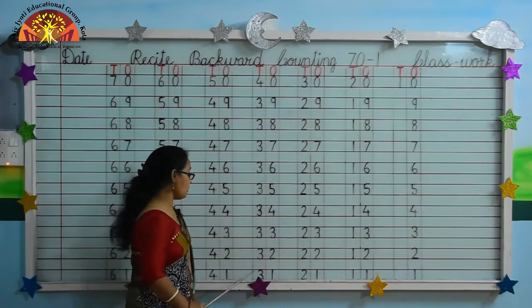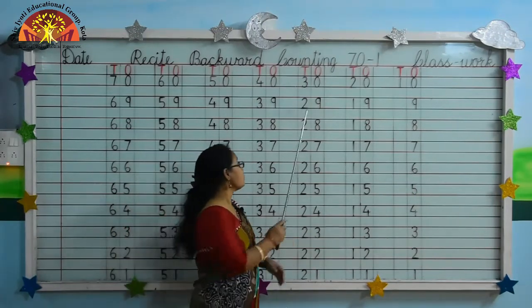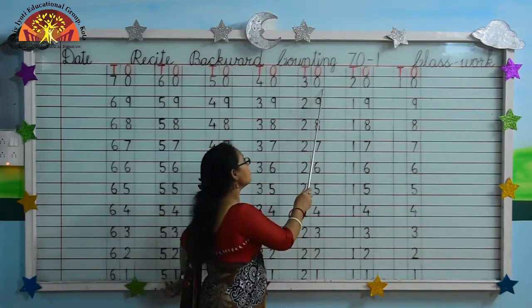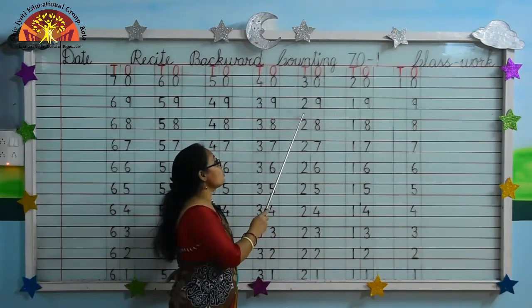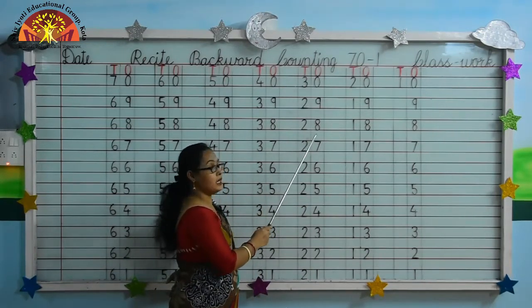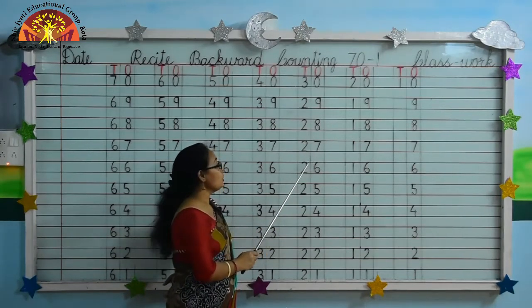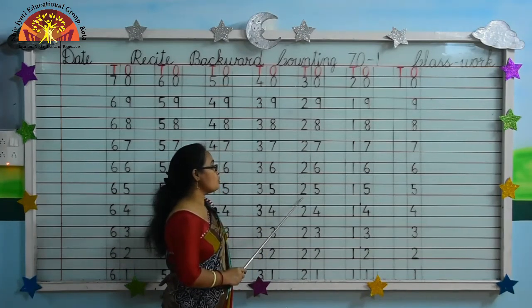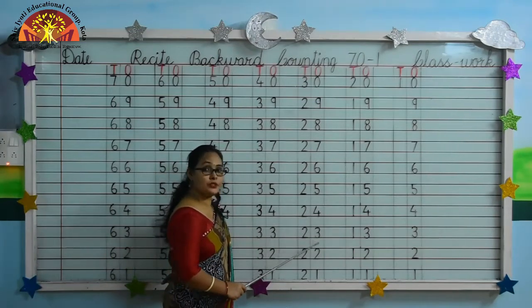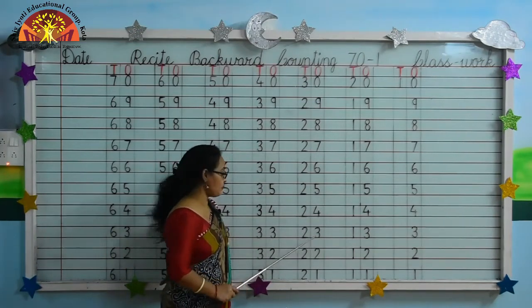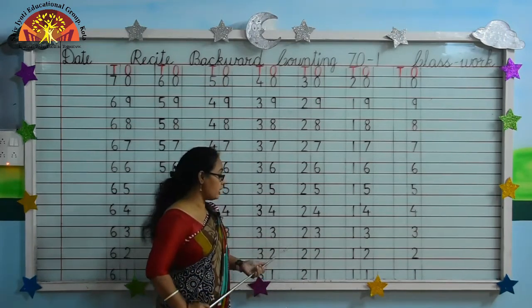Kids, now you tell me what comes before 31. Yes, 30, 29, 28, 27, 26, 25, 24, 23, 22, 21.